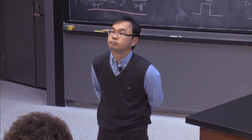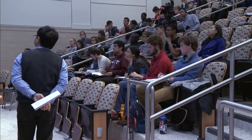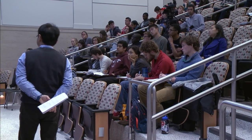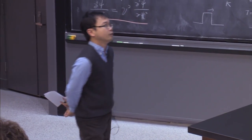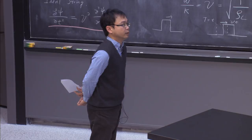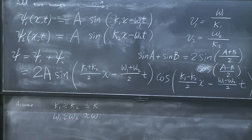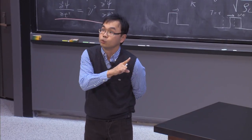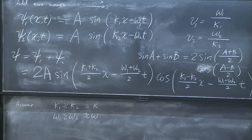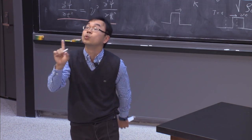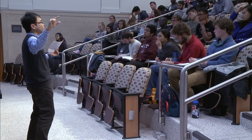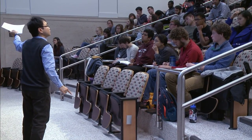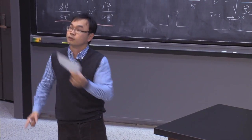The carrier and envelope can be different even when k₁ ≠ k₂ — the carrier frequency is the average and can still be large. But when k₁ and k₂ differ significantly, both carrier and envelope oscillate rapidly, making it harder to distinguish them as separate structures. The beat picture is clearest when k₁ ≈ k₂.